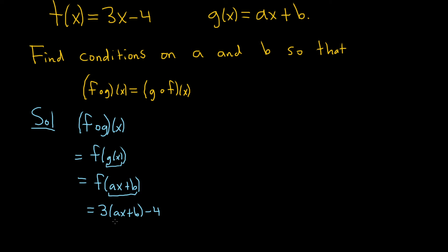Let's go ahead and distribute here. We would get 3ax plus 3b minus 4. I'm going to put this in a box because this is the left hand side. Right? So we've worked it out.